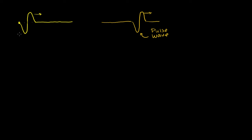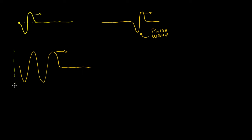Now, if I kept doing that — if I kept going up and down and up and down, essentially if I periodically did it at regular intervals — then my string would look something like this, where the perturbations or disturbances are going to move to the right with some velocity. What I want to do in this video is focus on this type of wave. Since I'm periodically moving this left side up and down and creating these periodic movements in the wave, we call this a periodic wave. The motion is repeated over and over again.